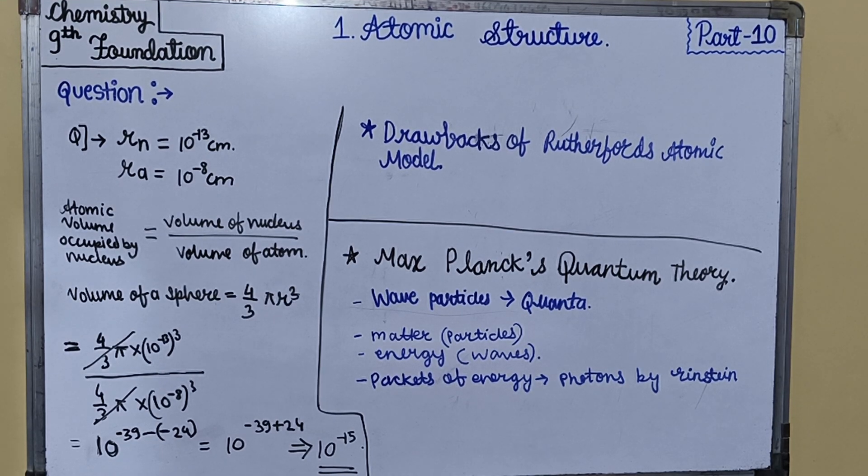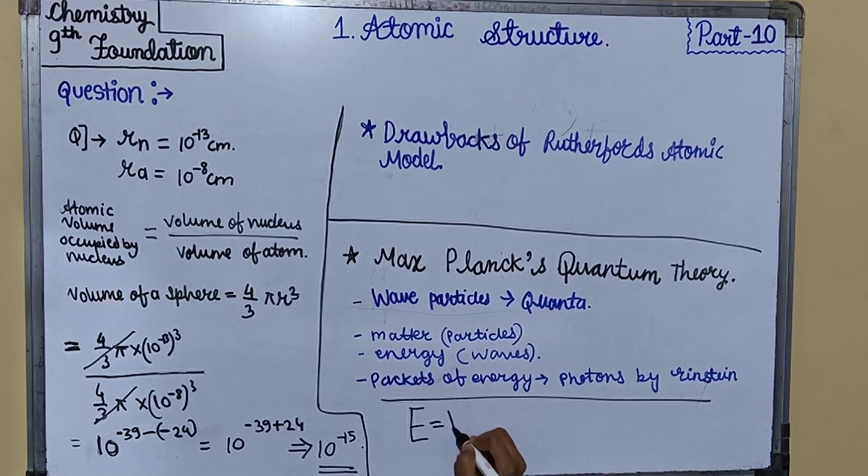Max Planck's quantum theory summarizes that an atom does not absorb or radiate energy continuously, but radiates discontinuously in the form of packets called quanta. These photons are present in electromagnetic waves. The energy present in each photon is E equals hν.